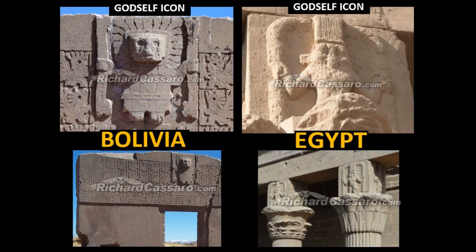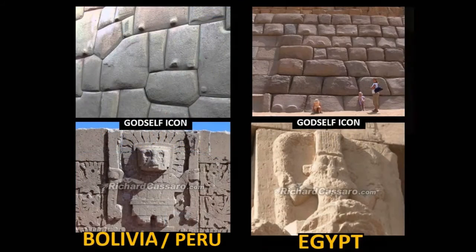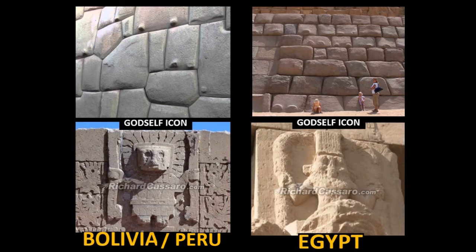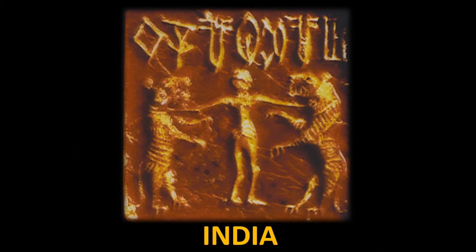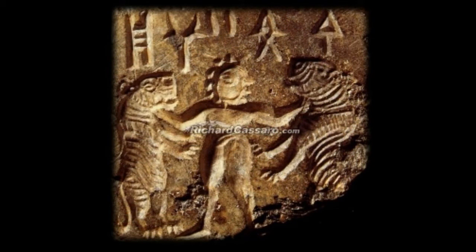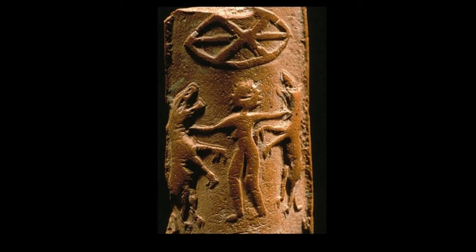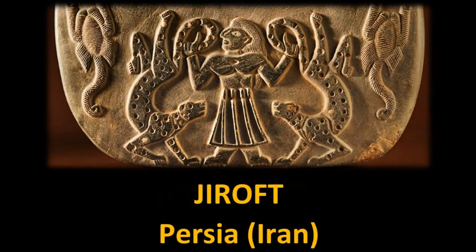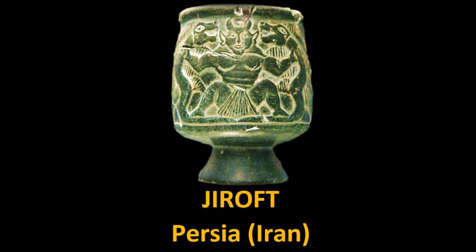Based on these parallels, it almost seems as if the Egyptians and pre-Incas were sister civilizations — descendants of the same golden age mother culture and inheritors of the same master mason tradition. Both cultures left megalithic stone masonry so advanced it leaves modern visitors in awe. Just as the God Self Icon was central for the Egyptians and pre-Incas, we also find it in India — the birthplace of Hinduism and home of many advanced megalithic monuments. The Indus Valley civilization produced brilliant examples, and key aspects of Hinduism such as non-duality and finding the center between opposites clearly reflect the ideas of the God Self Icon. A similar evolution appears in Persia, where God Self Icons are abundant in the prehistoric Jiroft civilization.